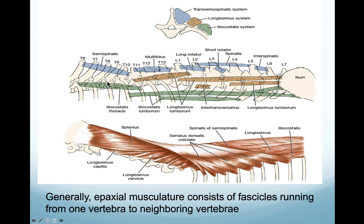Any muscle found dorsal to the transverse processes is called an epaxial muscle, whereas all muscles found ventral to the transverse processes of the vertebral column are called hypaxial muscles. This muscle is not one single segment - there are multiple segments and they extend from one vertebra to the adjacent vertebra.